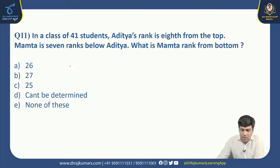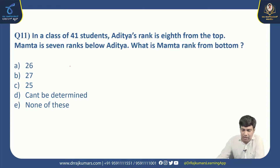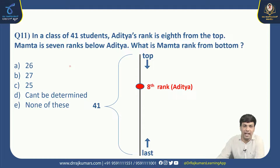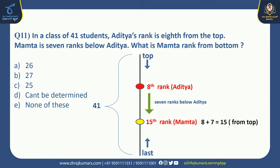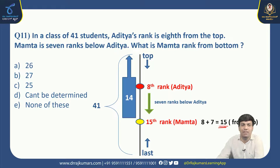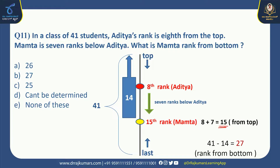Next: In a class of 41 students, Aditya's rank is 8th from the top. Mamata is 7 ranks below Aditya. What is Mamata's rank from the bottom? 7 ranks below 8th means 8 plus 7 equals 15. So Mamata is 15th from the top, with 14 members ahead of her. 41 minus 14 equals 27. Mamata's rank from the bottom is 27th. Right option is B.